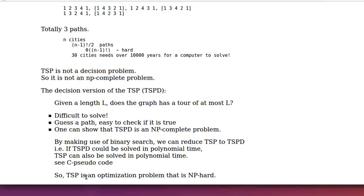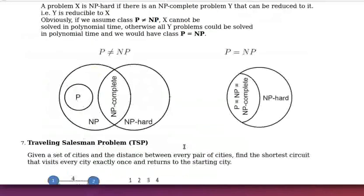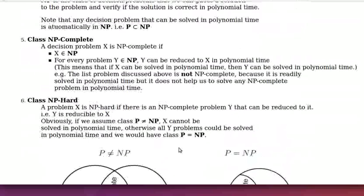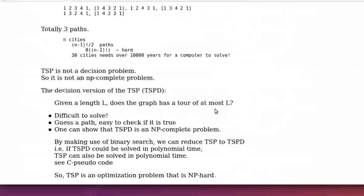Therefore, TSP is an optimization problem that is NP-hard. It should be noted that while the strict definition of NP-completeness is tied to decision problems, it is common to use the term more broadly to describe the complexity of optimization problems that have been shown to be NP-hard. In this sense, some authors do consider TSP as NP-complete, but strictly speaking it is not.